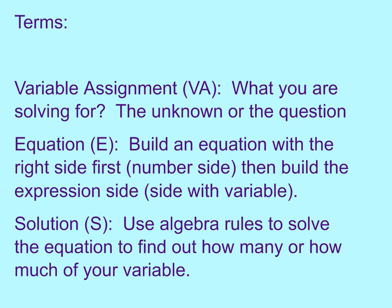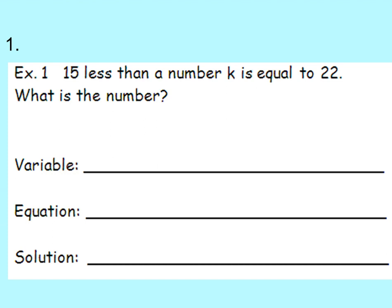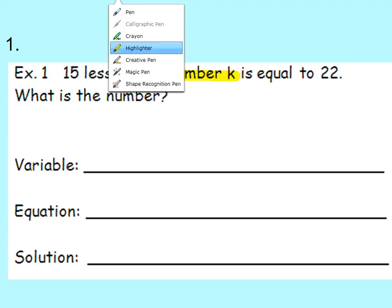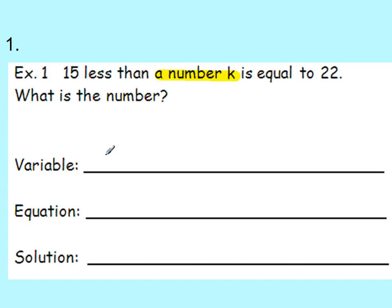Our first problem: 15 less than a number k is equal to 22. What is the number? It says the number is k, so identifying and assigning the variable is already done for us in this problem — a number k. So we're going to keep our variable k. On your sheet, go ahead and put for your variable assignment: k is the number.